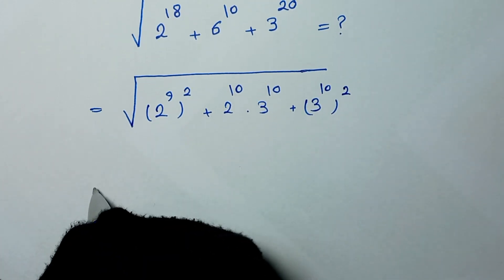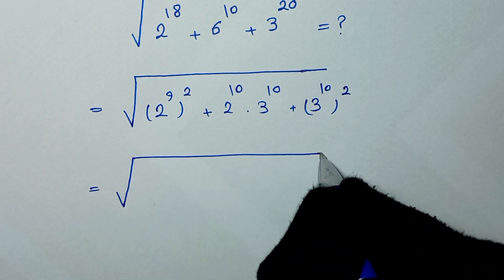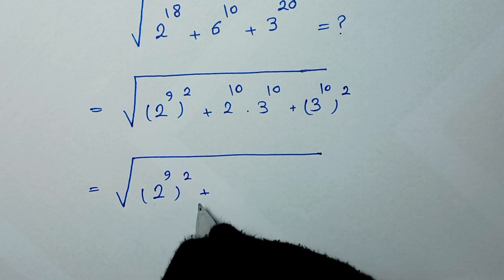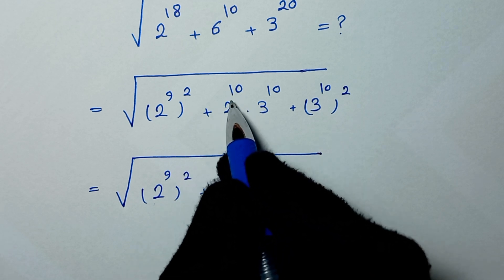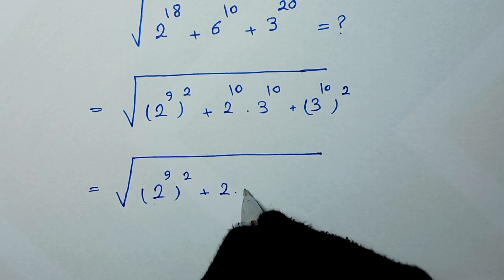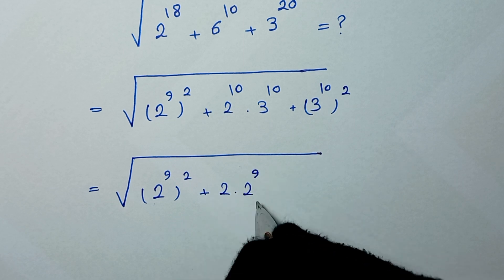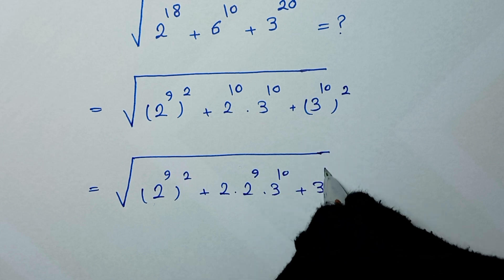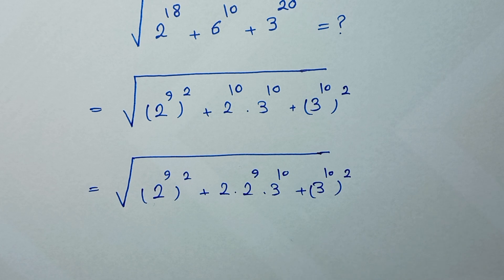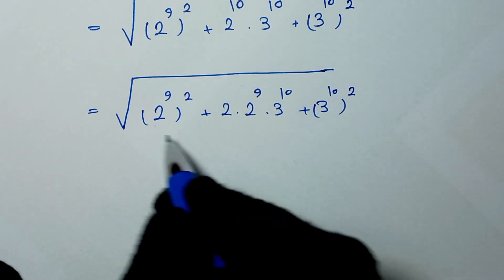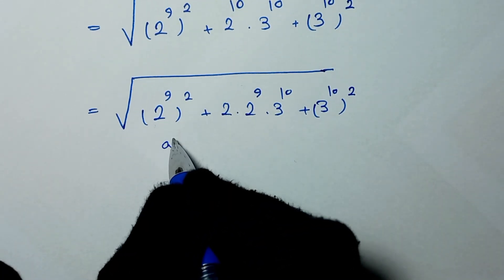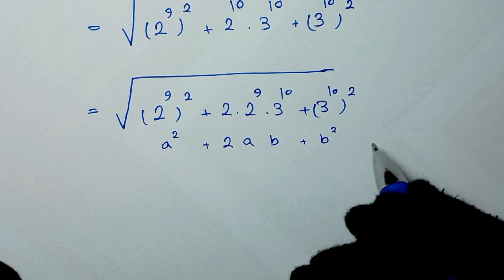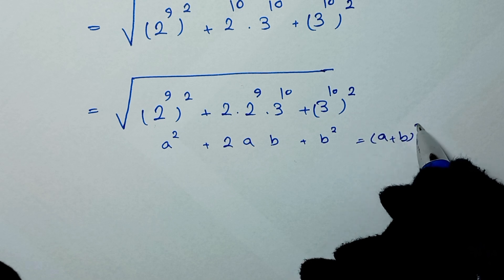In the next step, we have the square root of (2 to the power of 9) squared, plus 2 times 2 to the power of 9 times 3 to the power of 10, plus (3 to the power of 10) squared. This is in the form of a squared plus 2ab plus b squared, which equals (a plus b) squared.